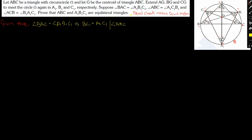Similarly, angle ABC equals angle A1C1B1, which gives us AC equals A1B1. And finally, angle ACB equals angle B1A1C1, which gives us AB equals B1C1. Hopefully all three of these points are clear.